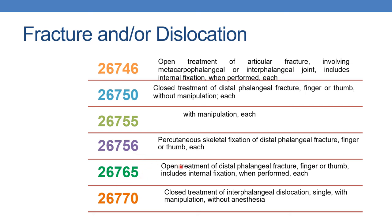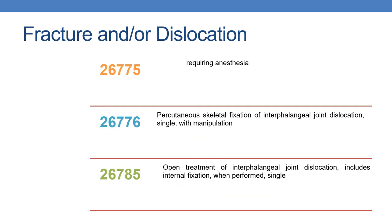Next is 26765: open treatment of distal phalanx fracture, finger or thumb, including internal fixation when performed. Next is 26770: closed treatment of interphalangeal joint dislocation, single, with manipulation, without anesthesia. With anesthesia it is reported by 26775. Next is 26776: percutaneous skeletal fixation of interphalangeal joint dislocation with manipulation. Open treatment of interphalangeal joint dislocation is reported with 26785.